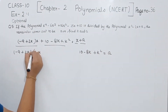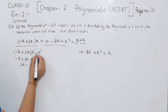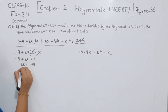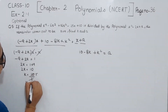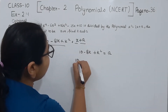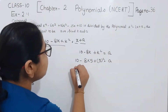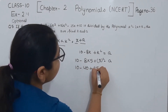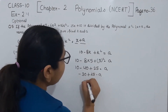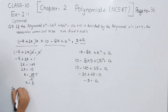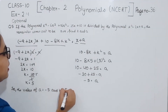From minus 9 plus 2k equals 1: 2k equals 1 plus 9, so 2k equals 10, therefore k equals 5. Now substituting k equals 5 into 10 minus 8k plus k squared: 10 minus 8 times 5 plus 5 squared equals 10 minus 40 plus 25, which gives minus 5. So a equals minus 5.